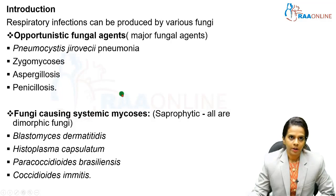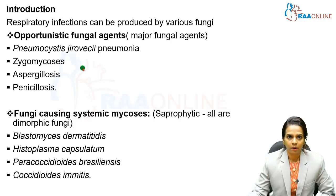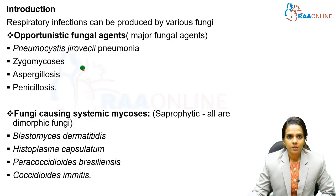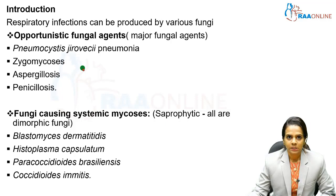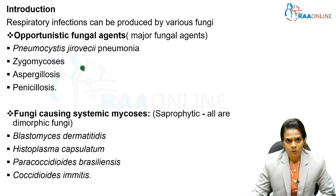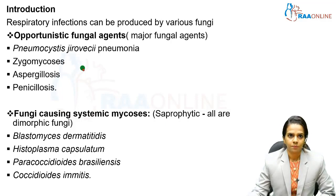Moving on to the introduction. Respiratory tract infections can be produced by various fungal agents, broadly classified into opportunistic fungal agents and fungi causing systemic mycosis. Opportunistic fungal agents are the major fungal agents that cause opportunistic infections in immunocompromised individuals. The first and foremost are Pneumocystis jirovecii pneumonia, zygomycosis, aspergillosis, and penicilliosis — these are the opportunistic fungal agents which cause infections in immunocompromised individuals.